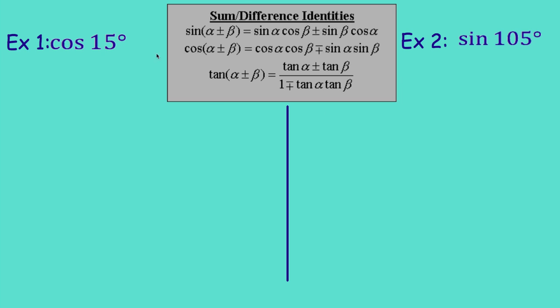Mr. Brust gave us the cosine difference identity, but the same process works for all the sum and difference identities. For sine: sine(alpha ± beta) equals sine(alpha)·cosine(beta) ± cosine(alpha)·sine(beta) — the sign stays the same. For cosine: cosine(alpha ± beta) equals cosine(alpha)·cosine(beta) ∓ sine(alpha)·sine(beta) — the sign switches. So let's do the cosine of 15 degrees.